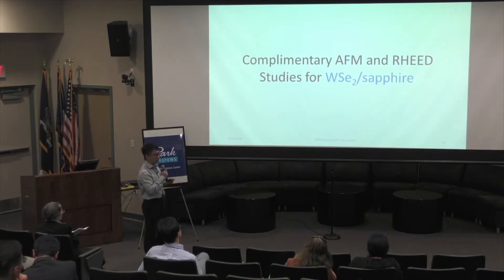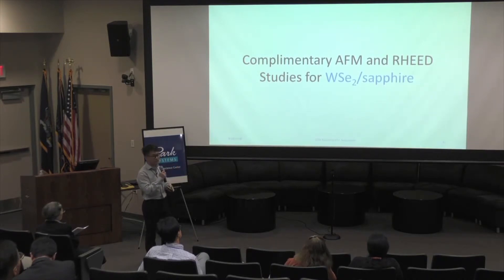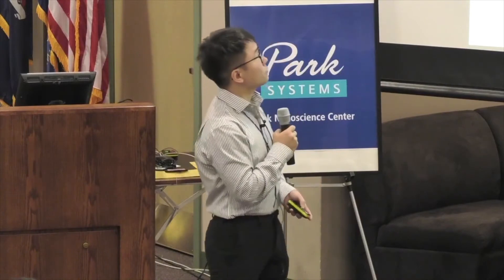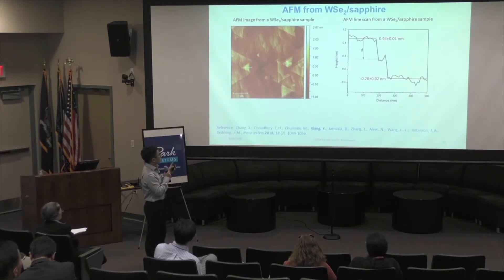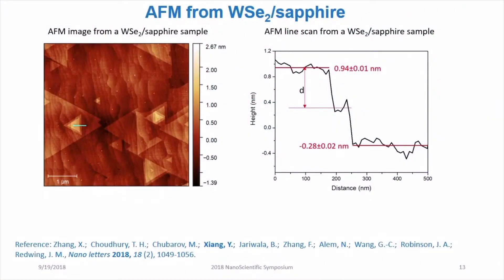As a second example, I want to show our complementary study for tungsten diselenide on a sapphire system, which was provided by our collaborators from Penn State University. This is an AFM image from that sample, and from this image we can gain two important pieces of information.